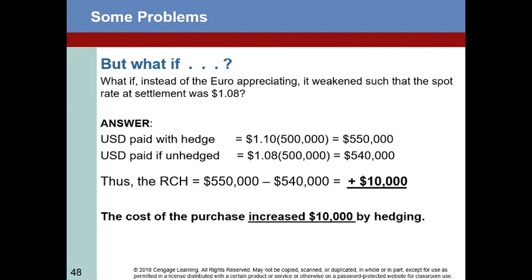What if instead the euro had weakened such that the spot rate at settlement was $1.08? We had already locked in through the forward contract a price of $1.10, so we paid $550,000. But if the rate was $1.08 at that time and we had purchased those 500,000 euros at that price, it would have cost us only $540,000. So the real cost of the hedge in this case was $10,000 — hedging actually cost us money. We were worse off by $10,000 as a result of hedging.